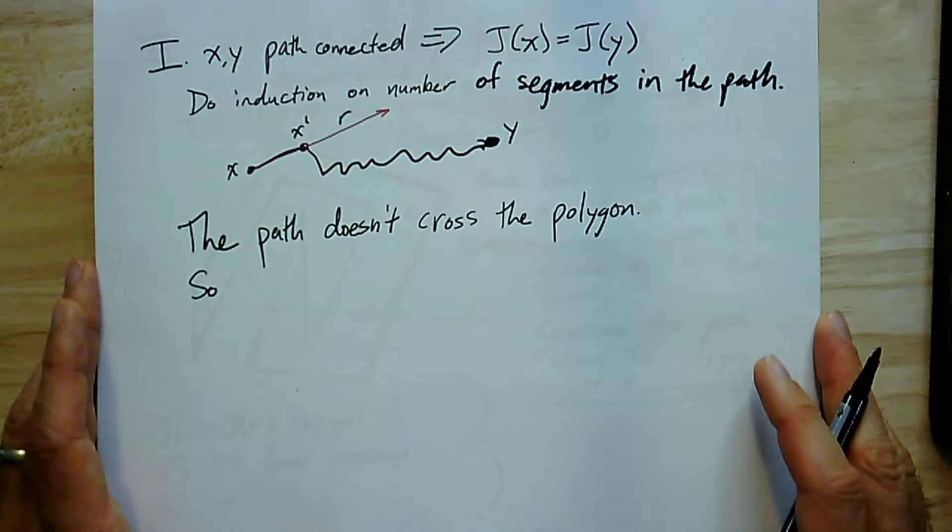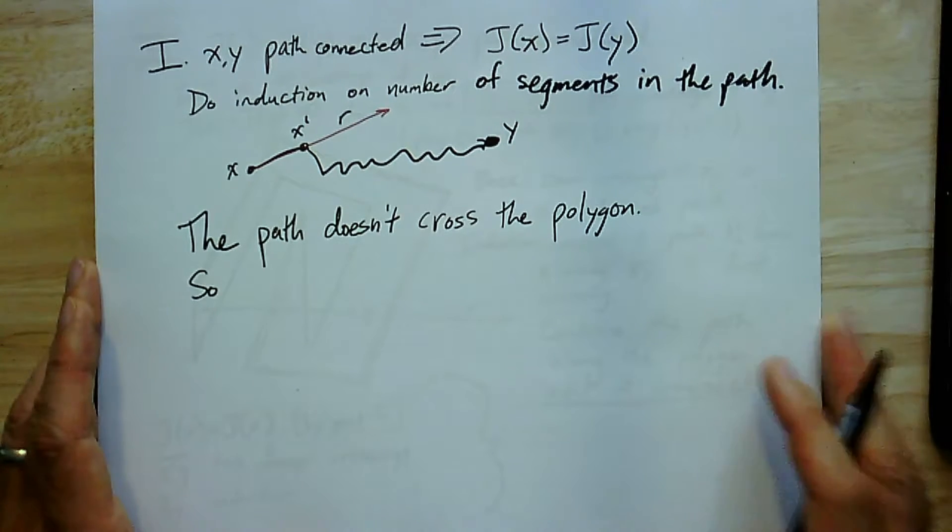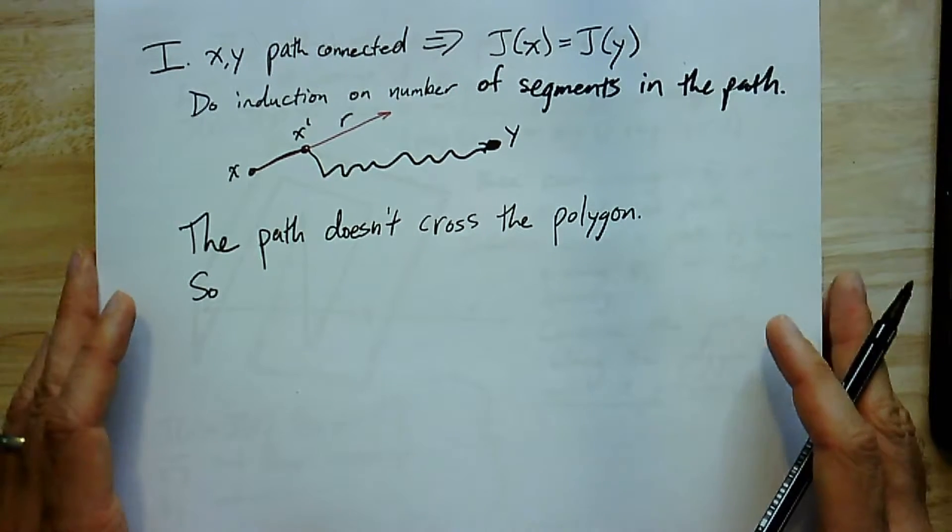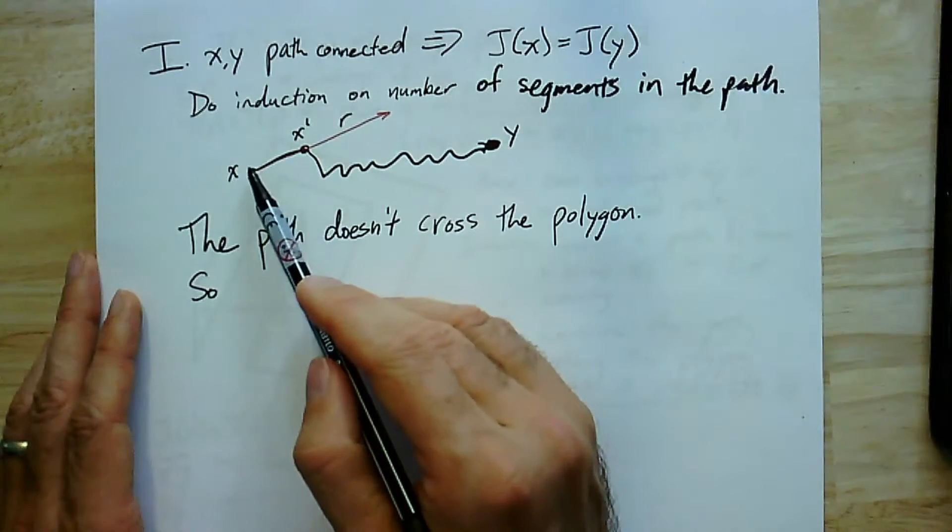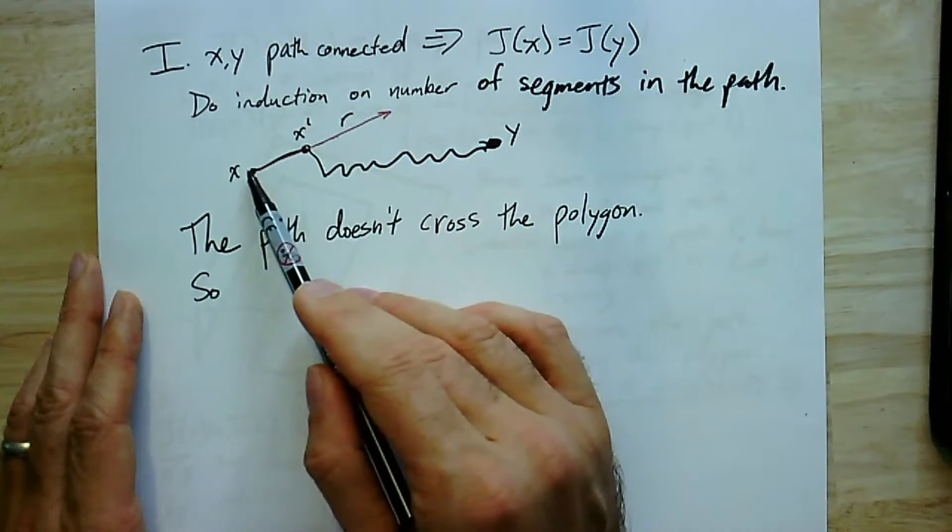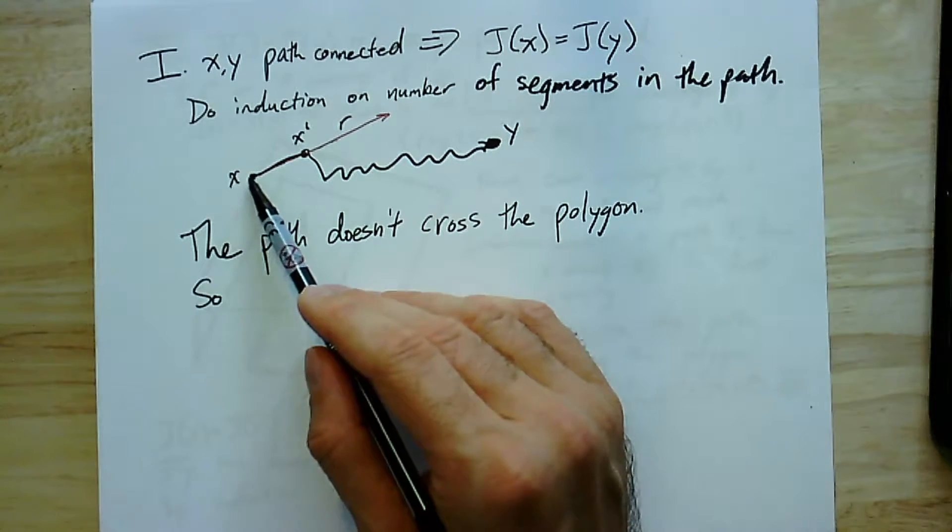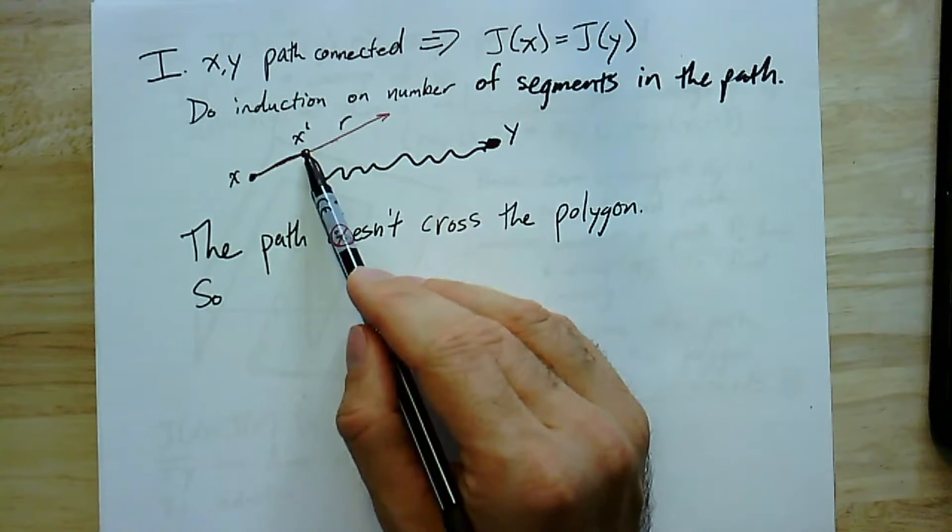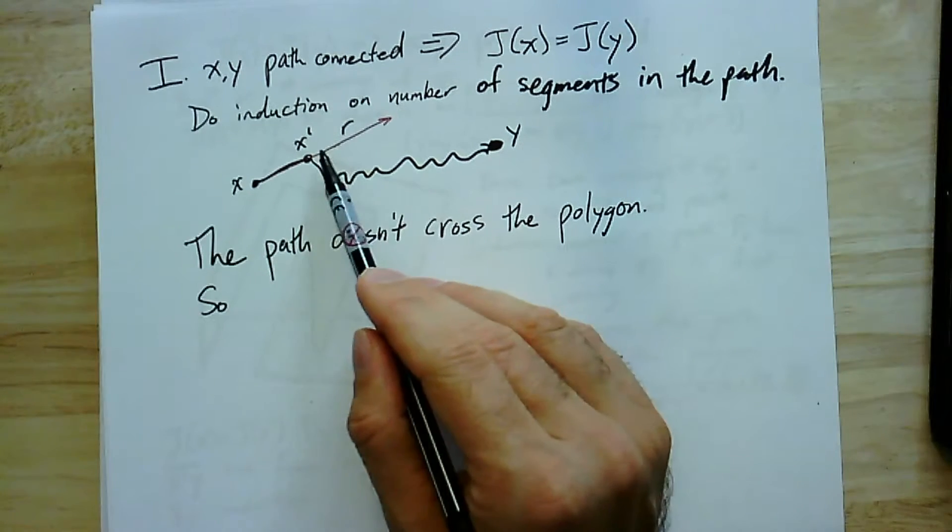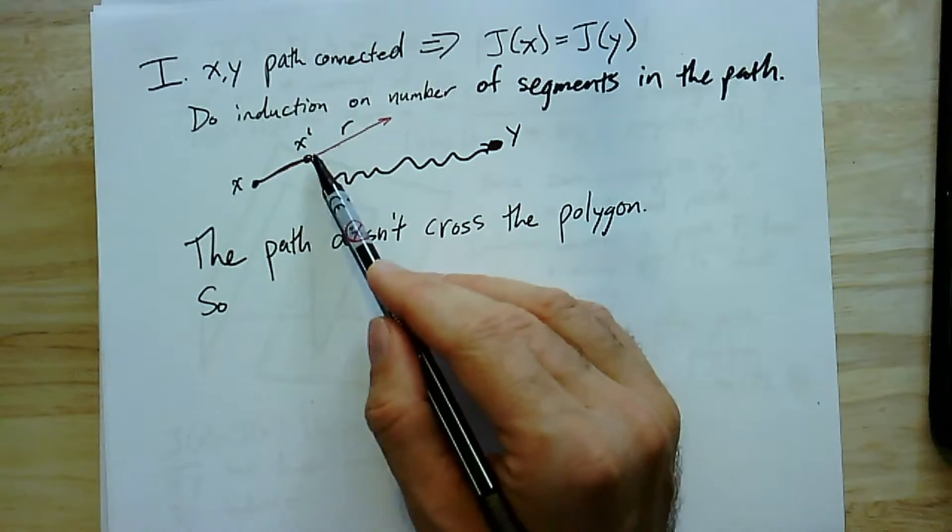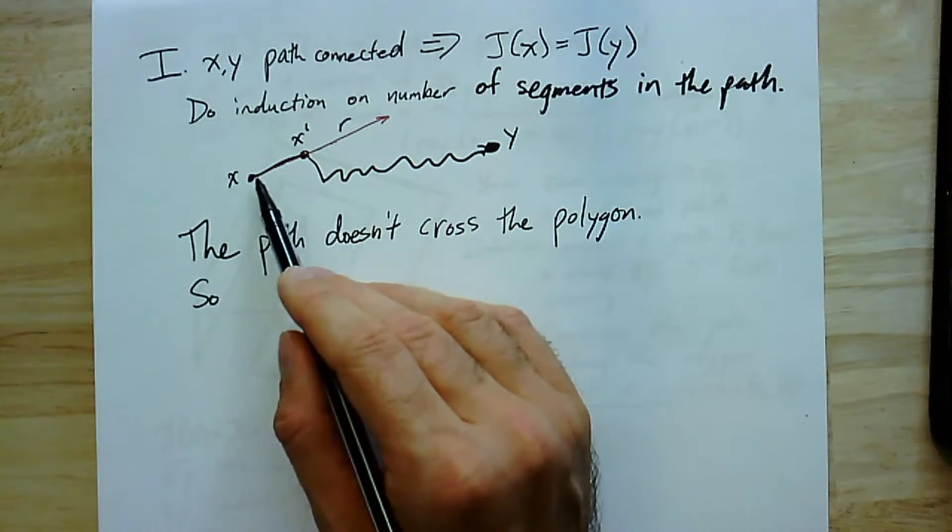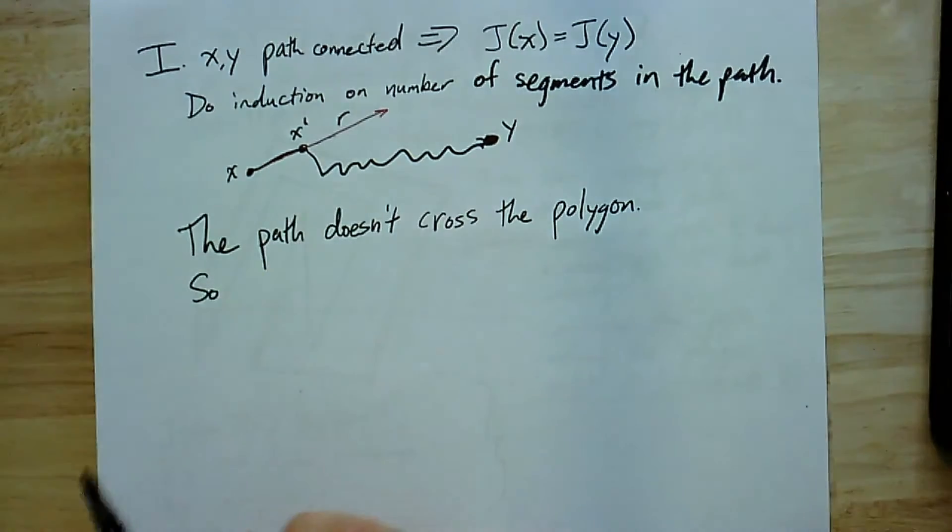All right, so the base of the induction is if there's a path of length, or a straight line segment from x to y, then j(x) equals j(y). And that's clearly true because if I look at the ray from x to x', if I look at just this one ray, if this first part of it is entirely outside the polygon, that is, it doesn't cross the polygon, then the number j(x) has to be equal to j(x'). The number of crossings with this ray, there aren't any crossings here, so all the crossings have to be in the part that they share. That's for a path, a line segment of length one, that is a path with a single line segment.